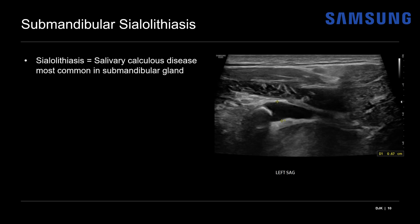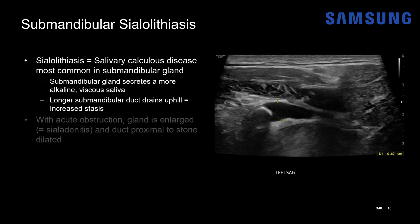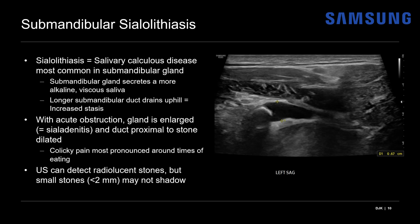Sialolithiasis is salivary calculus disease, most commonly seen in the submandibular gland for a few reasons. The submandibular gland secretes a more viscous alkaline saliva that promotes stone formation, and the submandibular duct is a long duct that drains somewhat vertically uphill, leading to increased stasis. When this duct becomes acutely obstructed, the gland can become enlarged and inflamed — known as sialadenitis — and the duct proximal to the stone will be dilated. These cases clinically present with colicky pain most pronounced around times of eating. Ultrasound is great at detecting radiolucent stones, though small stones less than two millimeters may not shadow.